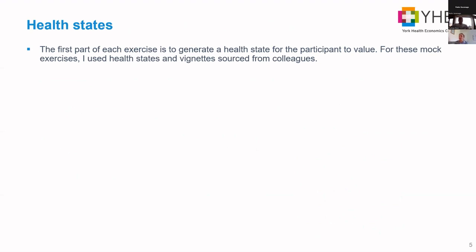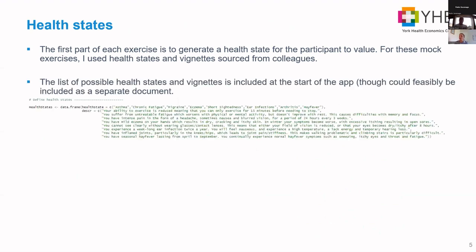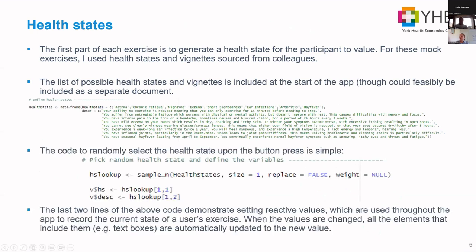When a user starts an exercise, a health state is randomized. All the health states in the app are mock states I wrote for colleagues — not clinically validated. They're defined as a list at the start of the app. When the user clicks the random button, a simple R code samples from that list. The last two lines define reactive values, which record the current state of the user's experience. Reactive values update automatically when included in text boxes, so when the utility value changes, the text boxes and action buttons update with it.